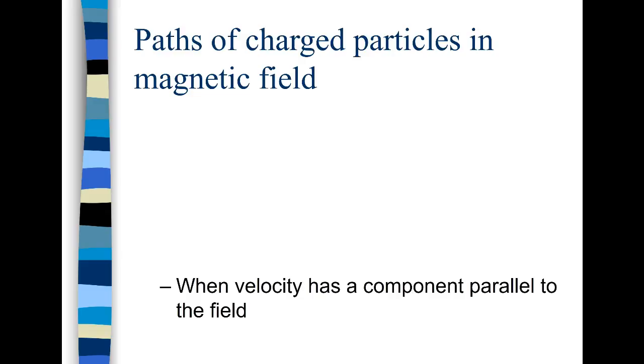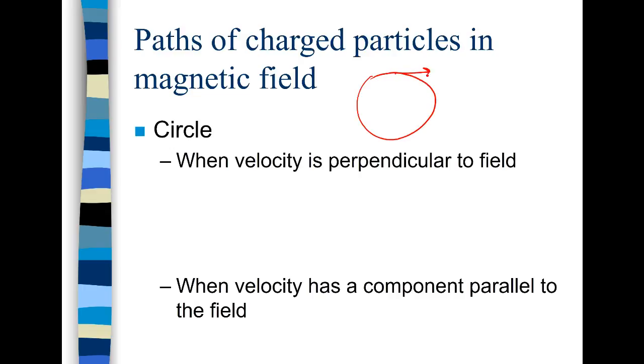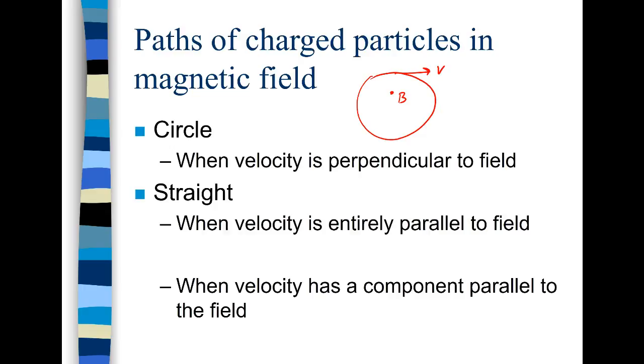So now we can look at the paths of charged particles in magnetic field. The first thing that we saw was the circle when the velocity is perpendicular to the field. So that's the velocity. And if the field is going into the page, for example, you can also have a straight line when the velocity is parallel to the field. We saw this previously. But if v is parallel to B, then the magnetic force is zero, and so there's no change to the path.